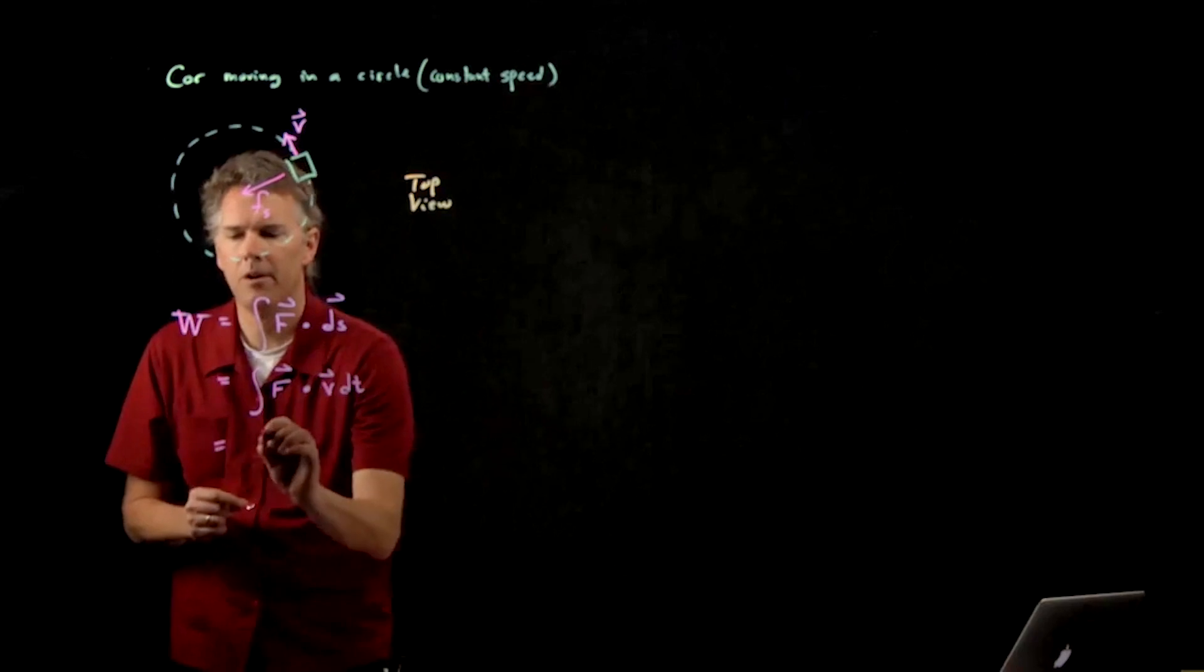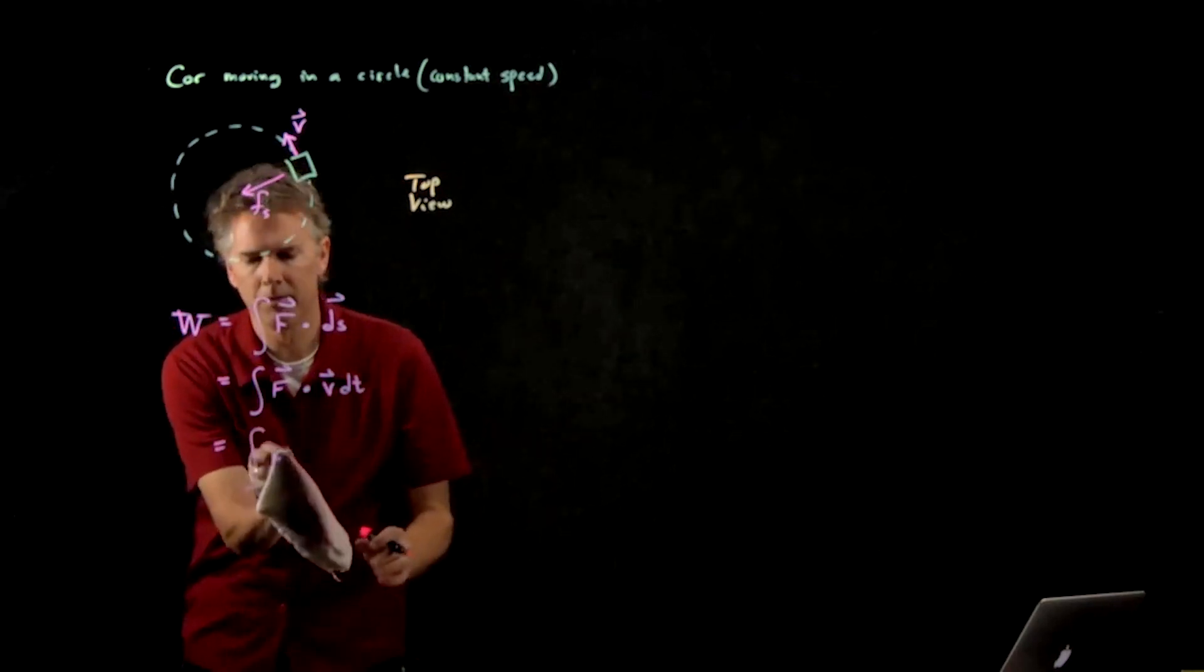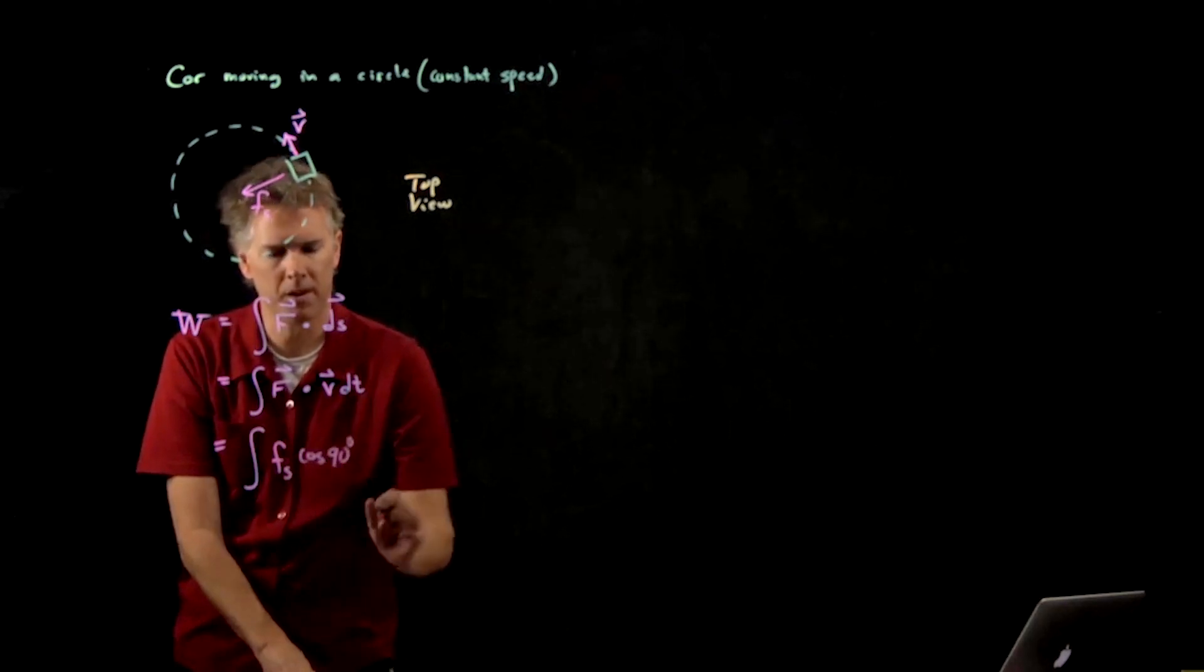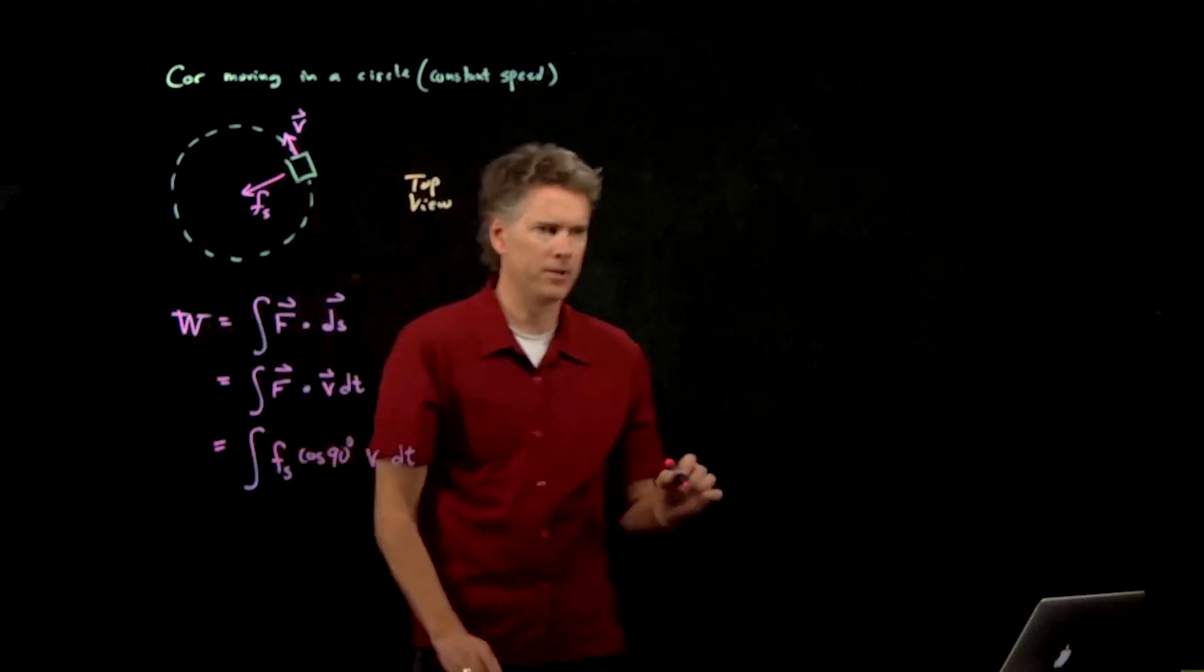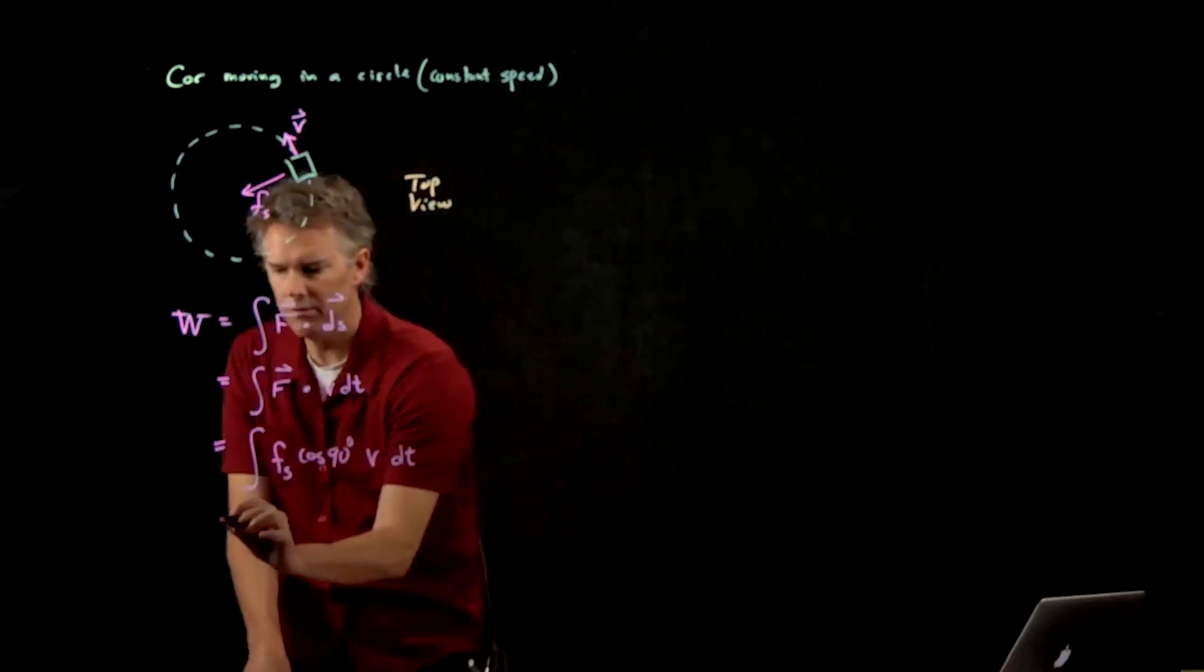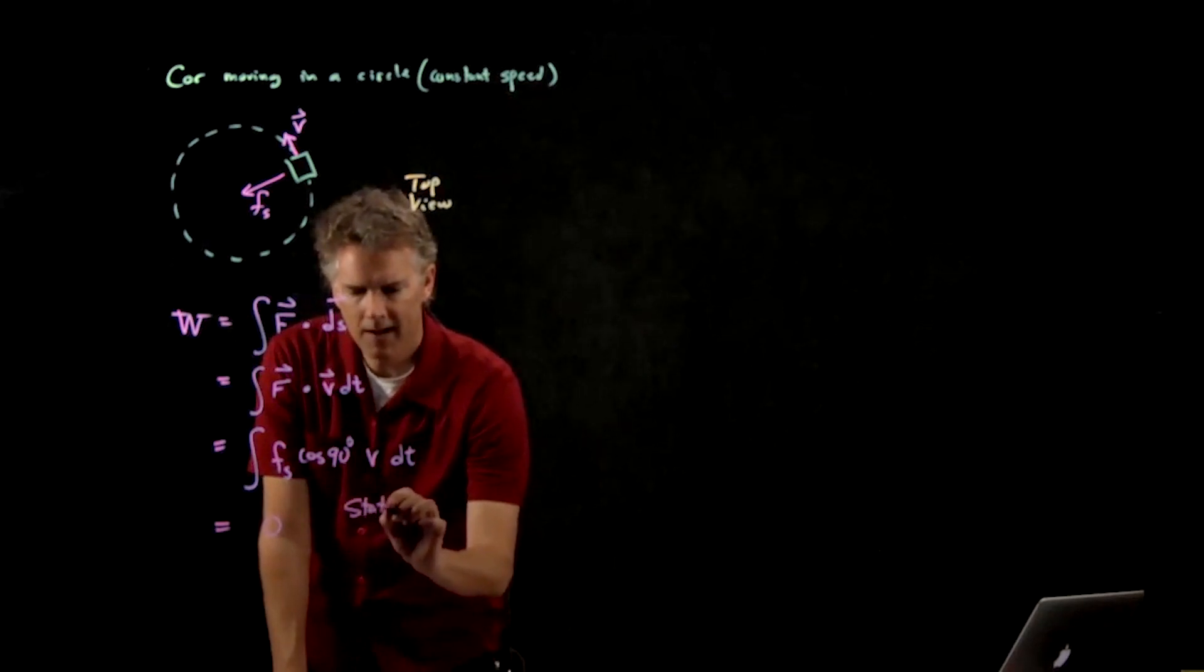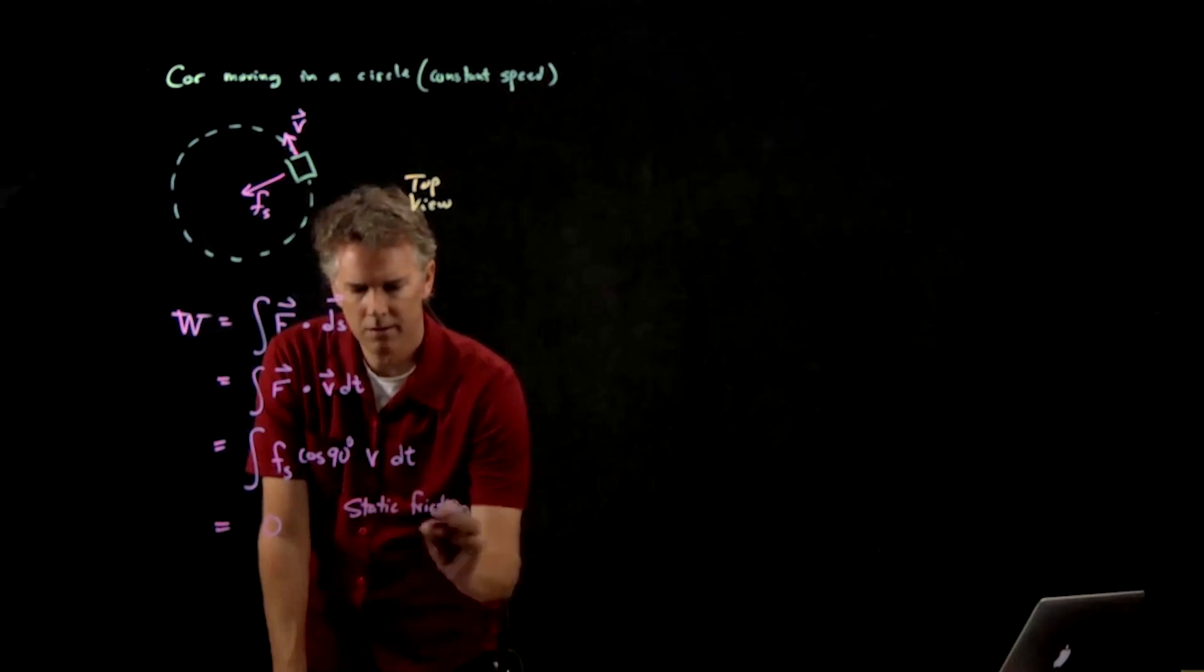And therefore this first part becomes f sub s. We have the cosine of the angle between them, which we said was 90. We have the velocity v and we have a dt, but the cosine of 90 is zero. And so static friction does no work.